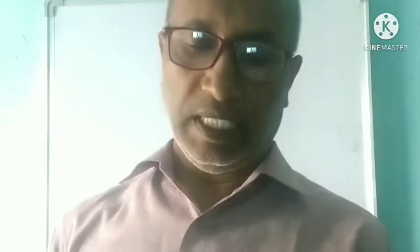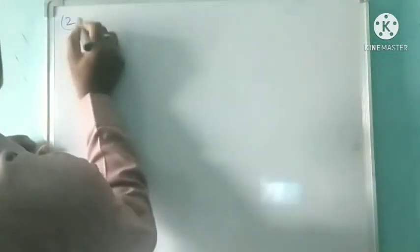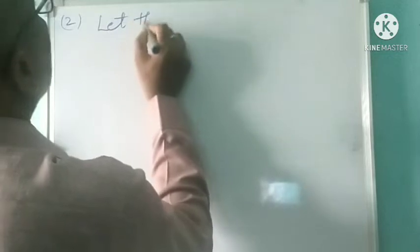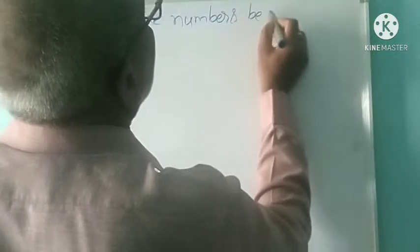Question number 2. A positive number is 5 times another number. If 21 is added to both the numbers, then one of the new numbers becomes twice the other number. What are the numbers? In this question, let the numbers be x and 5x.